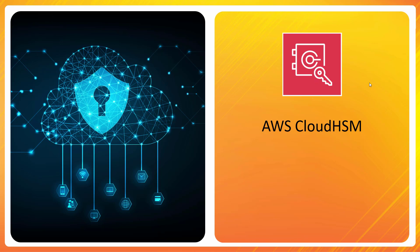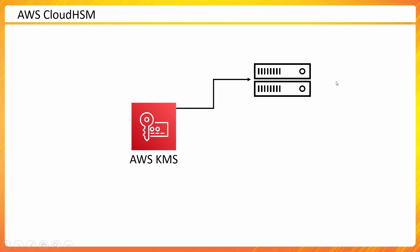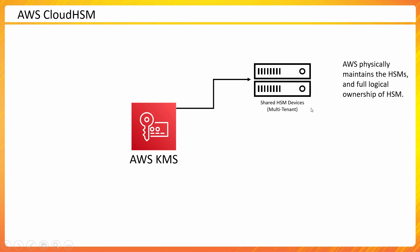Let's now focus on AWS Cloud HSM. We already discussed AWS KMS — KMS is the front-end which allows me to manage my keys, and behind the scene there would be hardware which we call HSM devices on which my keys would be stored and managed. AWS physically maintains these HSM devices and they have full logical ownership of them. All upgrades, patches, deployment, and availability are maintained by them.